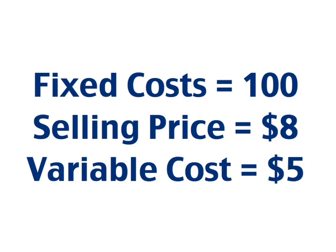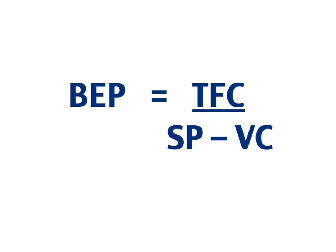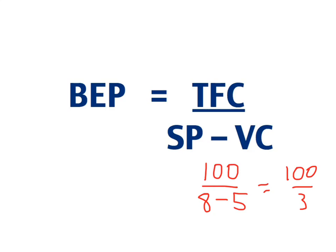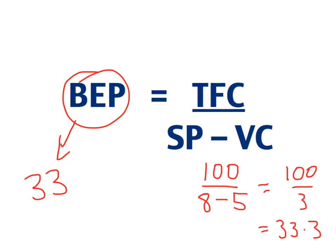There's one important point to highlight. In this example, my fixed costs are $100, I sell the product for $8, and it costs me $5 to buy. That gives $100 ÷ ($8 − $5) = $100 ÷ 3 = 33.3. A lot of people would round that down to 33, but that's incorrect — when I sell 33 products, I haven't yet broken even; I'm still making a loss. It's not until I've sold the 34th product that the business actually breaks even. So I always have to round up. If the answer is 33.3, my break-even point is 34 units.